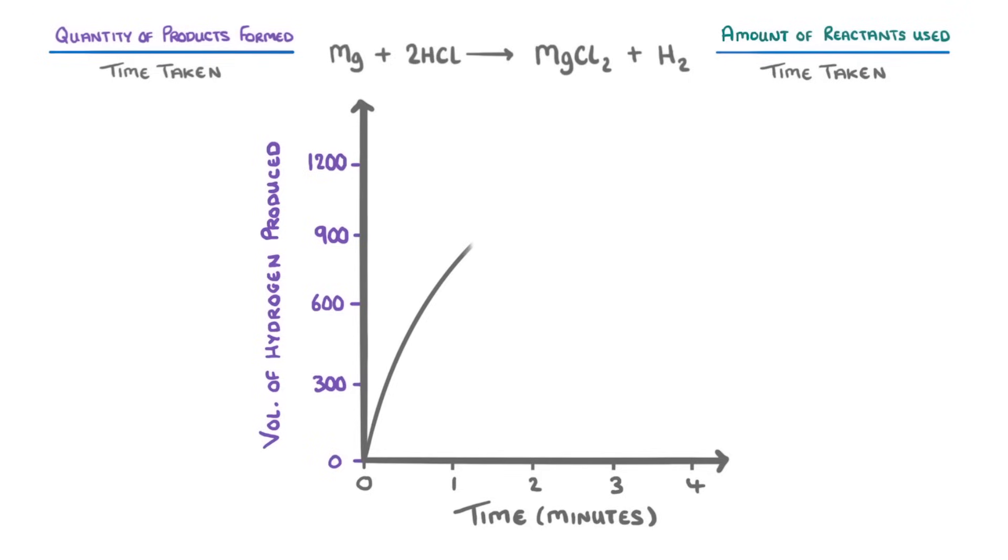As the magnesium starts to get used up though, the hydrogen will be produced more slowly, until finally the graph plateaus once all of the magnesium has been used up.